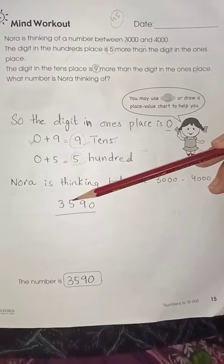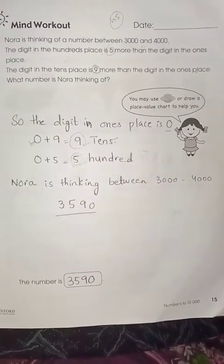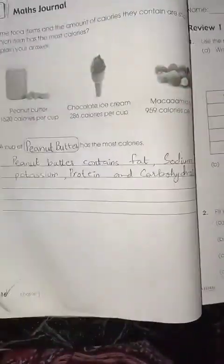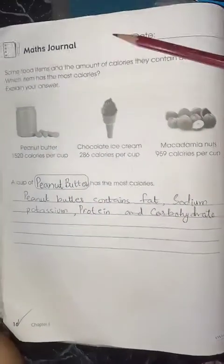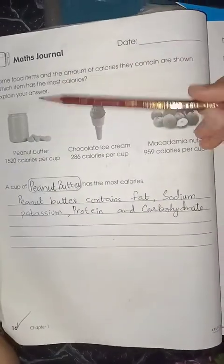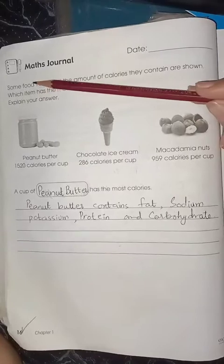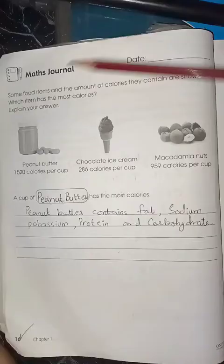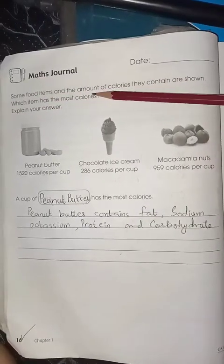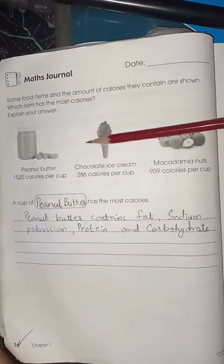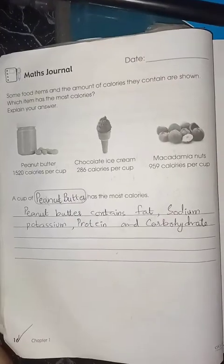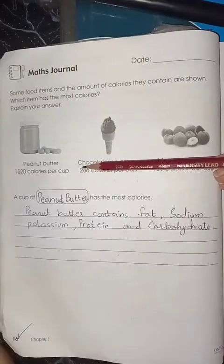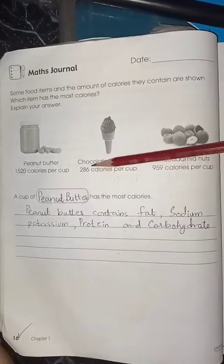Move on to the next page, page number 16. This is your math journal. Write the date again. Here are some food items and the amount of calories they contain are shown. Which item has the most calories?